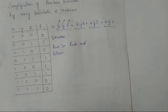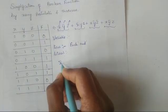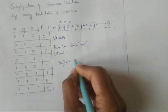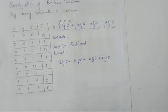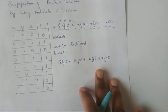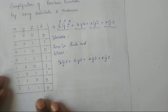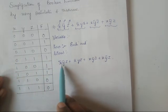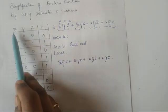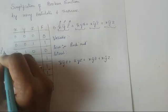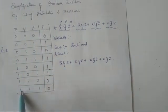Now let us understand the procedure to reduce this expression. I'll rewrite the expression: x-bar·y-bar·z + x-bar·y·z + x·y-bar·z-bar + x·y-bar·z. In an examination if they ask you to write the truth table, first count how many variables — here x, y, z, three variables — so 2 to the power 3 equals 8 possible inputs, from 0,0,0 to 1,1,1.